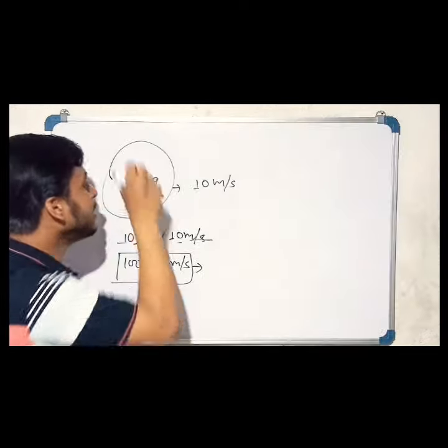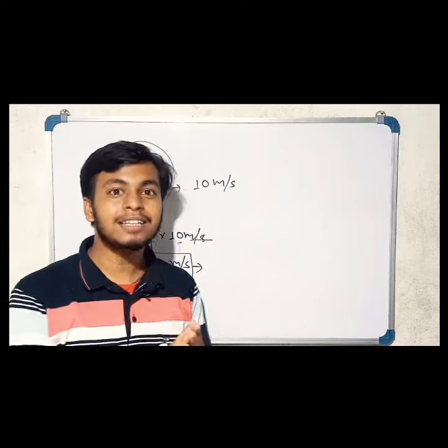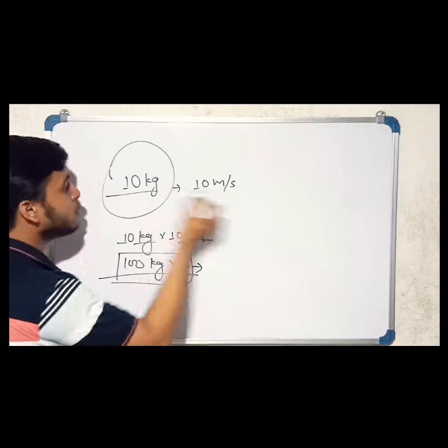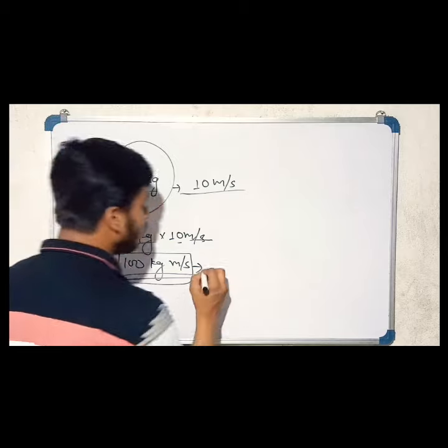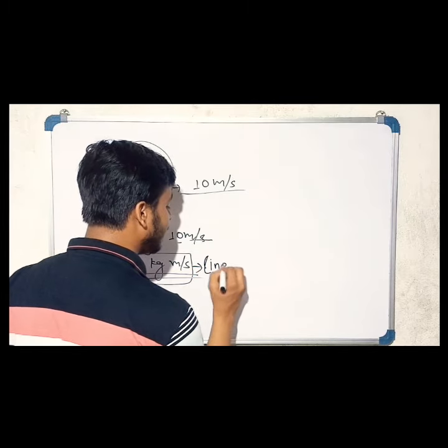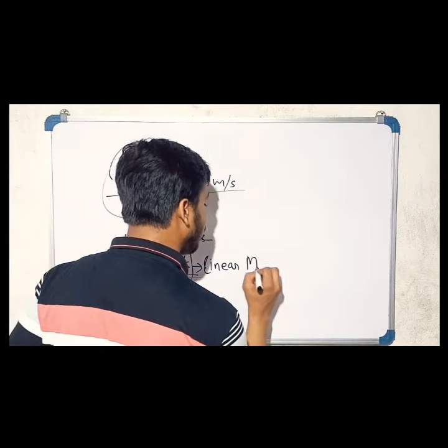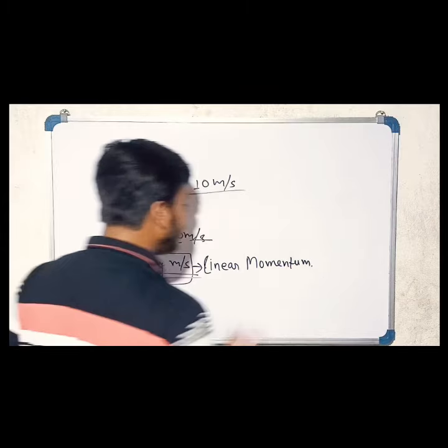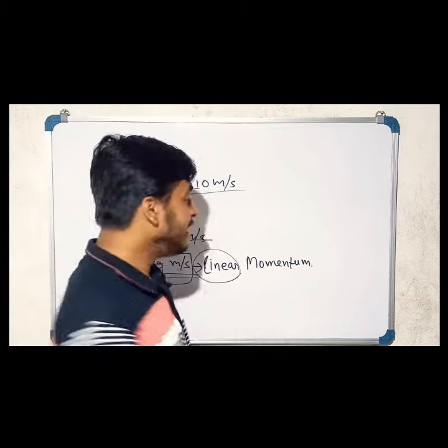This means that when you use mass times velocity, mass times velocity is linear momentum. Linear momentum. Now, linear momentum will change. That's why it leads to momentum.